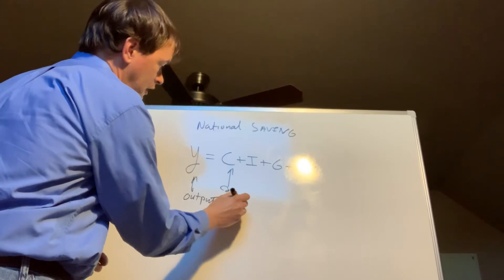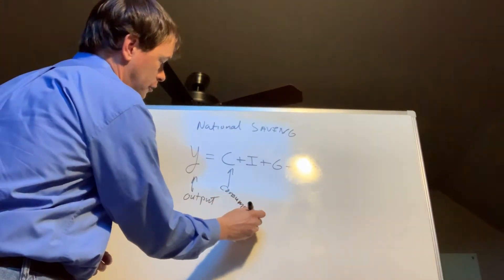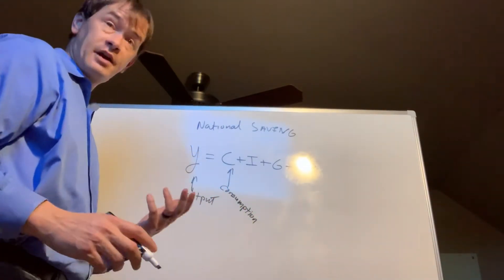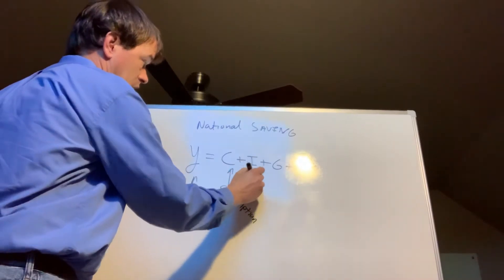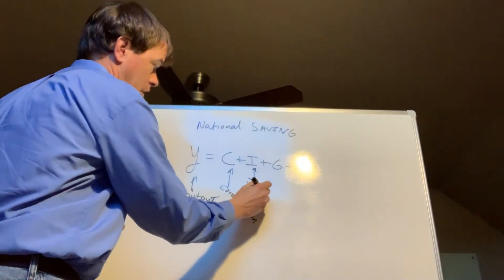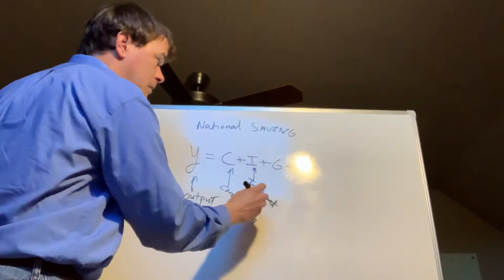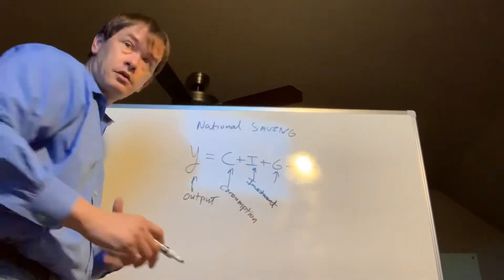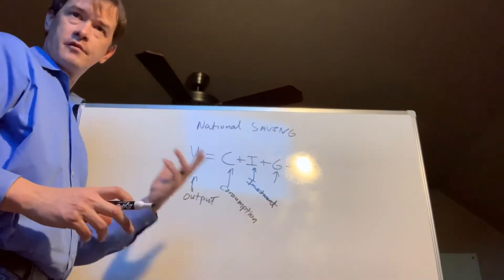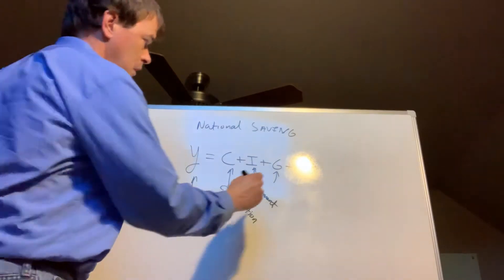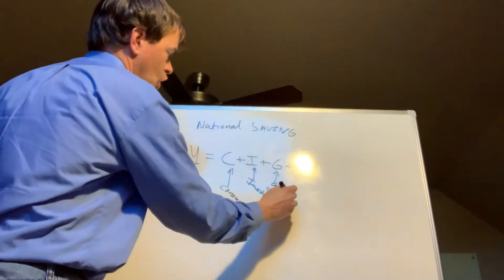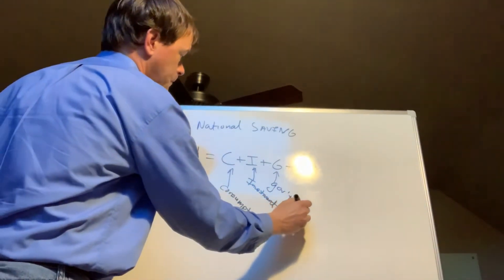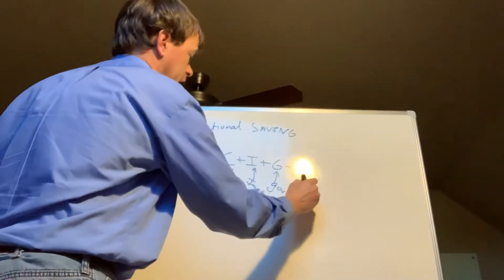As we talked about, we measure things from a consumer point of view. So this is everything consumers buy, this is consumption. Save for the purchases of houses, which are typically financed, which make that an investment. Investment made. Keep in mind, that also includes stock on the shelves at different businesses, that type of thing. This is government spending. Huge. And this is net exports.